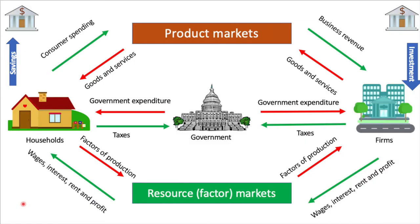However, if spending is less than income, then firms will cut production. If spending exceeds income, then firms will increase production. Let's start off with the aggregate expenditure function and we'll return to the idea of equilibrium towards the end of the video.